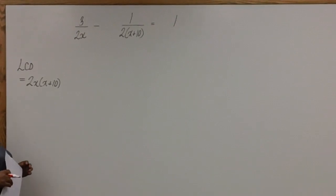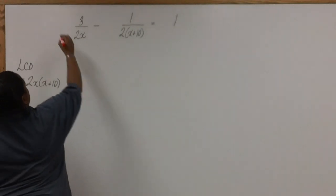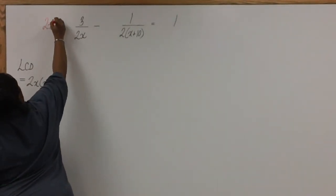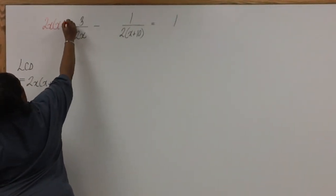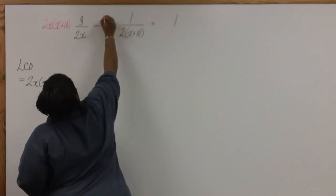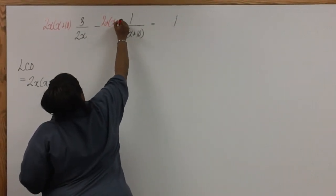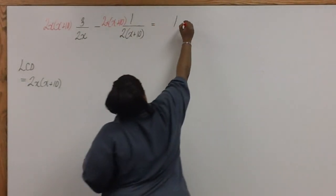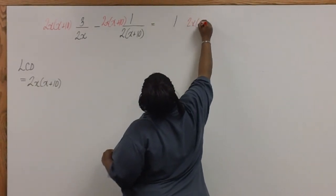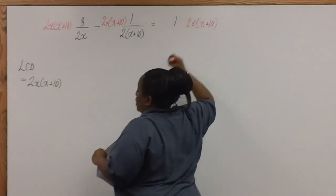The first thing we'll need to do is multiply all three terms by the LCD of 2x times x plus 10. Now we're ready to cancel.